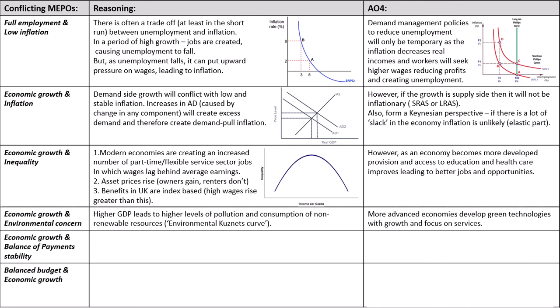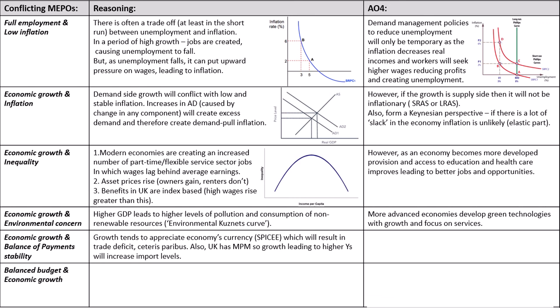Economic growth and balance of payments — pause the video and see if you can think of any AO3. Hopefully you've got that as the economy develops, there may be more demand for its products, leading to currency appreciation. As exports become more expensive and we import more through currency appreciation, that can cause a trade deficit. Also, as incomes rise with growth and more people enter employment, the UK has a marginal propensity to import — meaning we spend a higher proportion of additional income on imports — which leads to increased import levels and a balance of payments deficit.